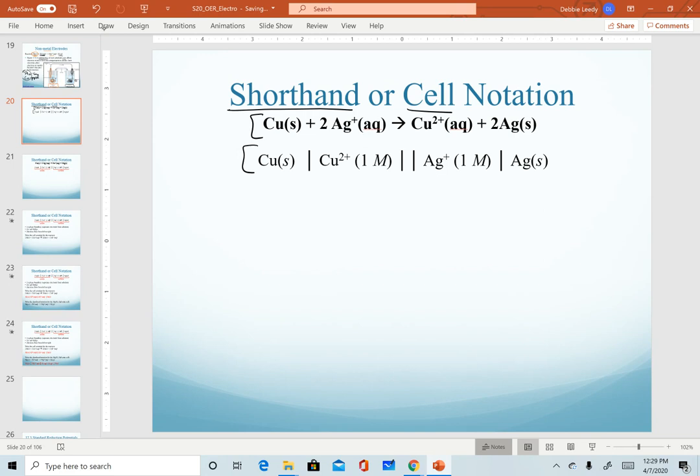When we use this notation, we start with the anode metal. In other words, the actual metal piece that will serve as our anode electrode. And on the very far right of this notation, we show the cathode metal. So again, whatever metal we are attaching our wire to in the cathode compartment.